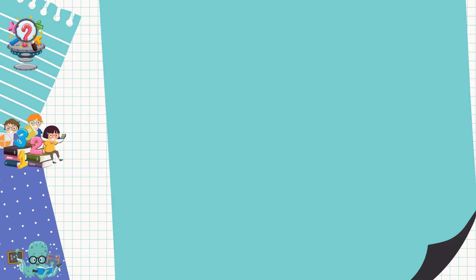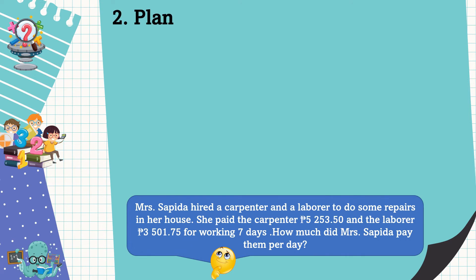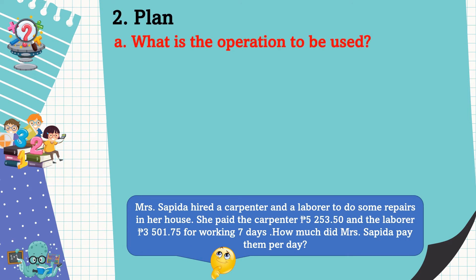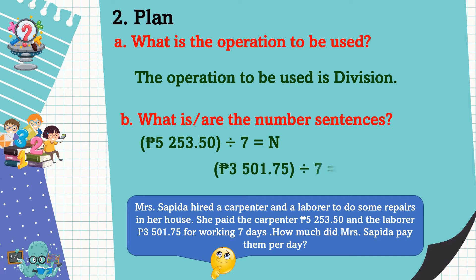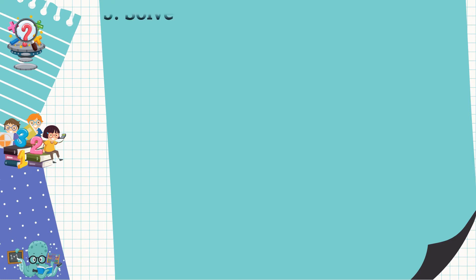So what is the next step? We're going to make a plan. What is the operation to be used? The operation to be used is division. What are the number sentences? The number sentences are: 5,253.50 pesos divided by 7 equals n — this is for the carpenter; and 3,501.75 pesos divided by 7 equals n — this is for the laborer. We already have a plan, so let's solve the problem.